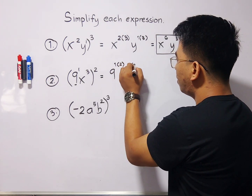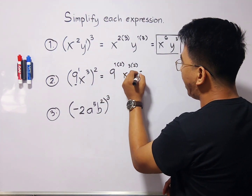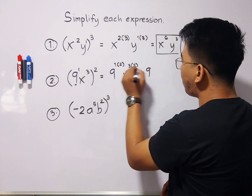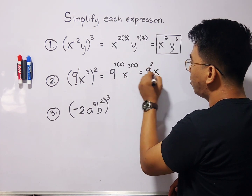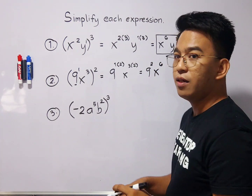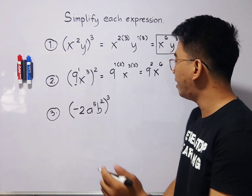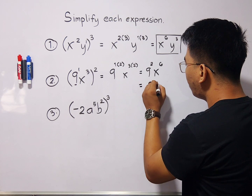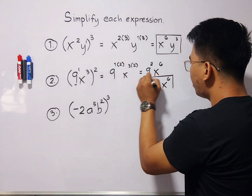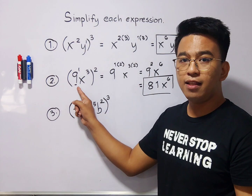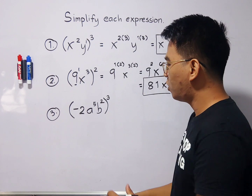For the variable x, we have x cubed times the outside exponent of 2. Simplifying the exponents: 9 raised to 1 times 2 equals 9 squared, and x raised to 3 times 2 equals x to the 6th. We don't stop here — 9 squared simplifies to 81. Therefore, the simplified form of (9x³)² is 81x⁶.